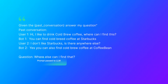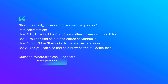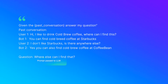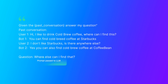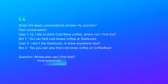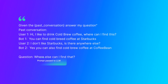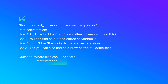Some information that will help the LLM make co-reference resolution. Like in this example, the prompt we give is: 'Given the past conversation, answer my question.' In the past conversation, we have an interaction where the user said 'I like drinking cold brew coffee, where can I get it?' and the last question is 'Where else can I find that?' — by 'that', I'm co-referencing cold brew coffee. The LLM also knows I don't want to drink at Starbucks or Coffee Bean.